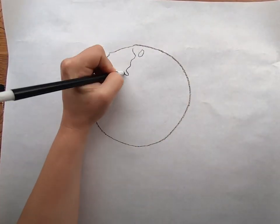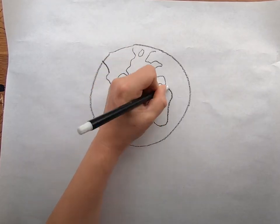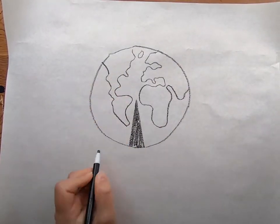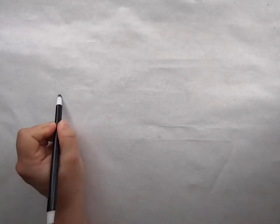Wetlands are found all over the world, on every continent except Antarctica. It's estimated that about 3-6% of the Earth's surface are wetland ecosystems.